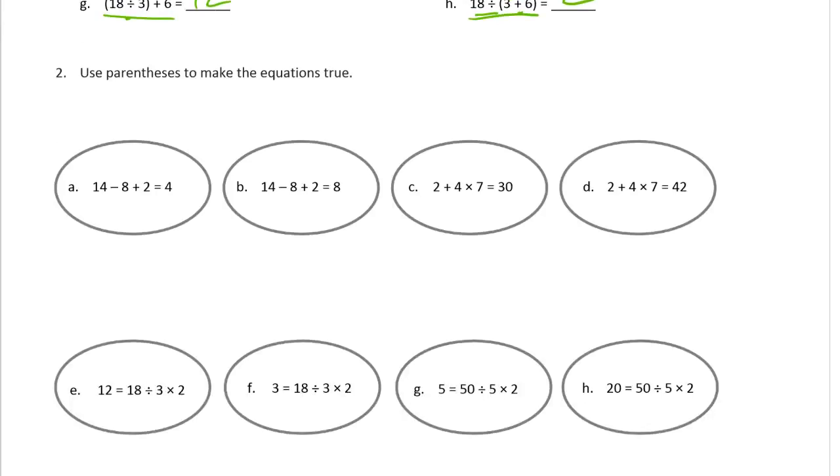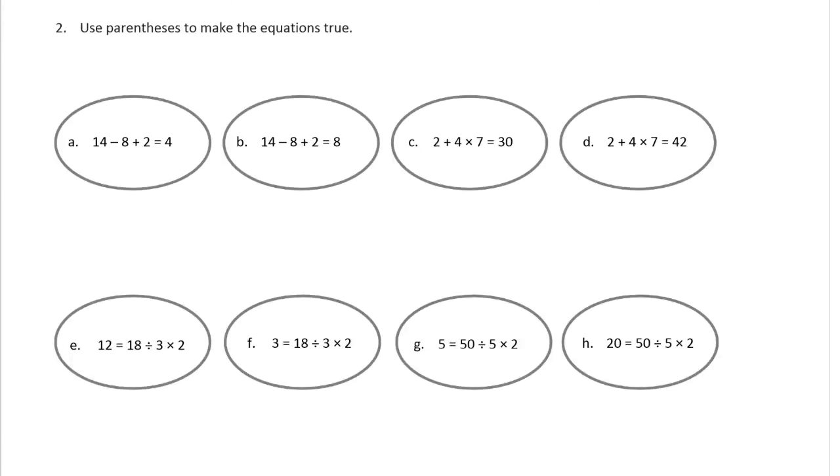And now we're using parentheses to make these equations true. So the way to do this is guess and check. So here's what I'm going to do. I'm going to guess here. What if it's around the first two. And if it's true, then I'm done. And if it isn't, then it's around the second two. It's not around the first two numbers. It's around the second two numbers or the first operation and the second operation.